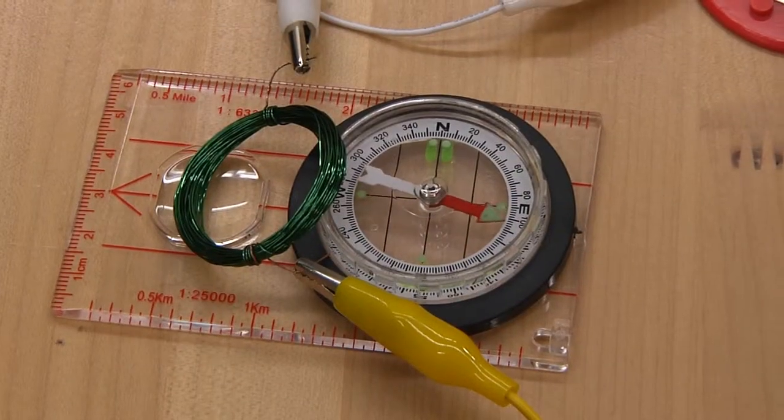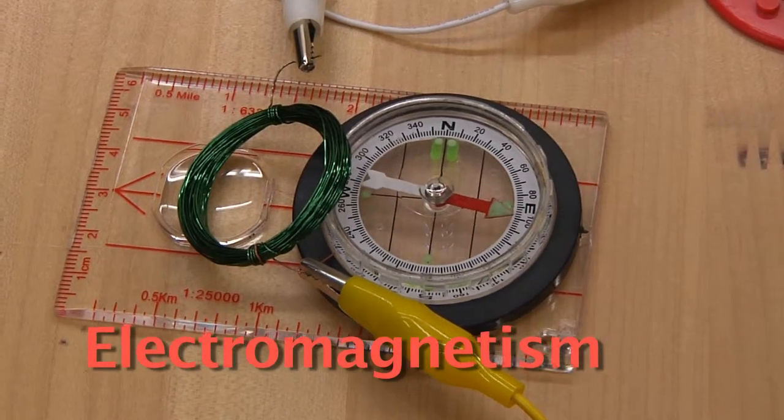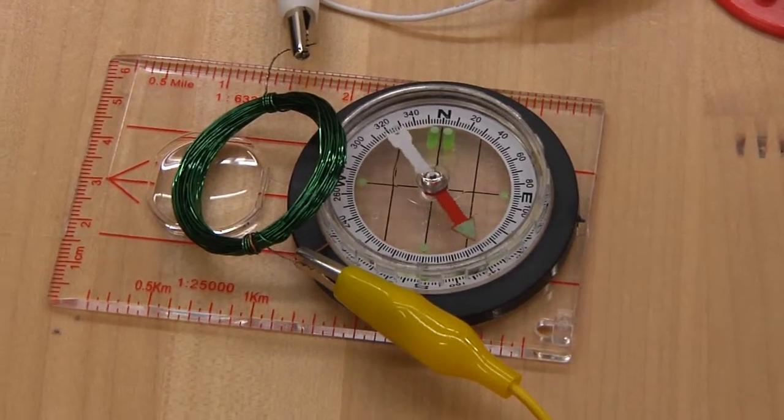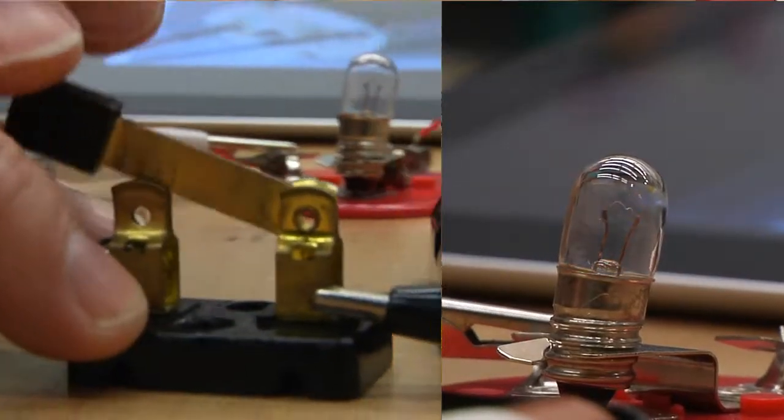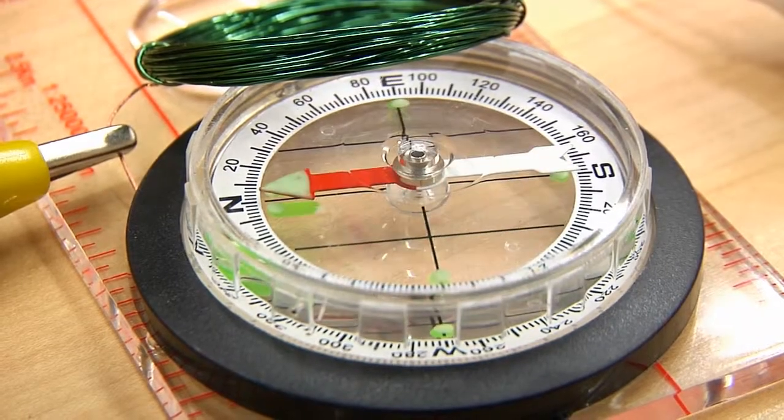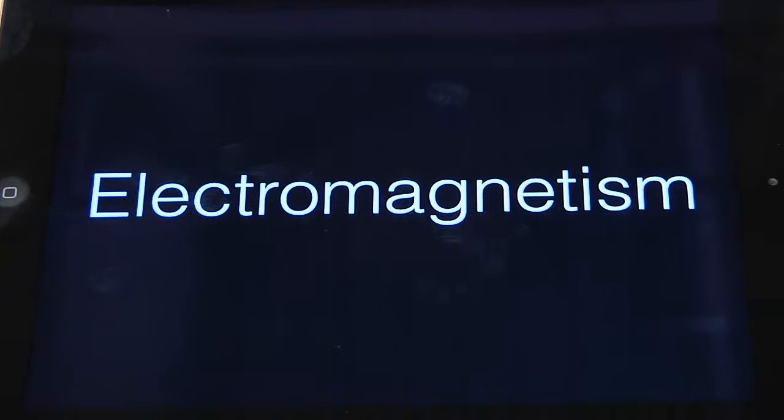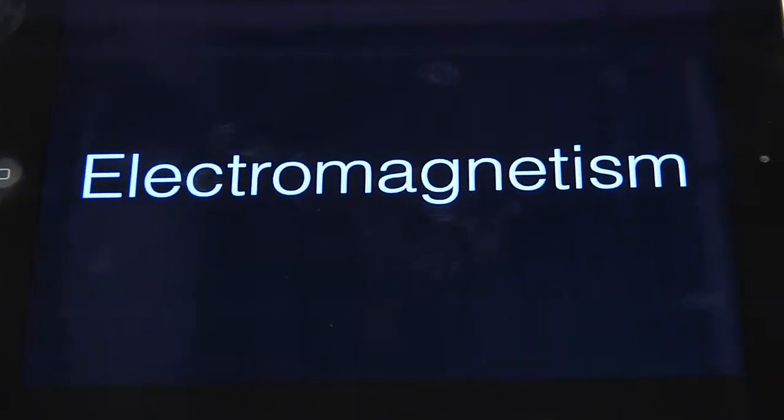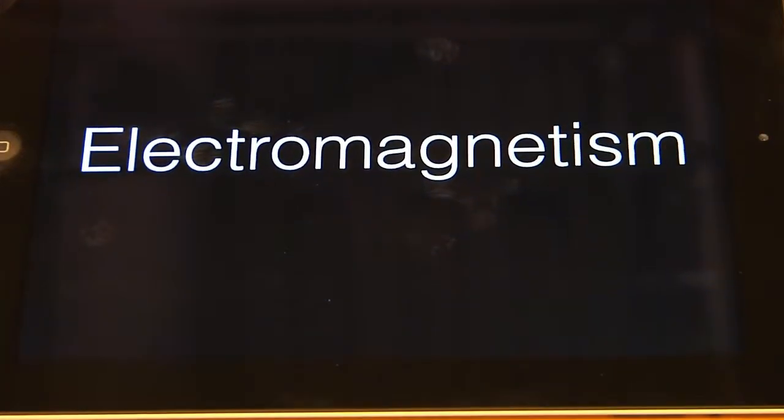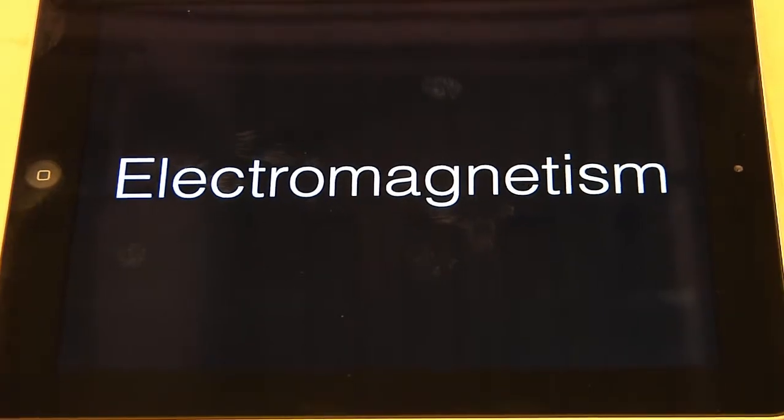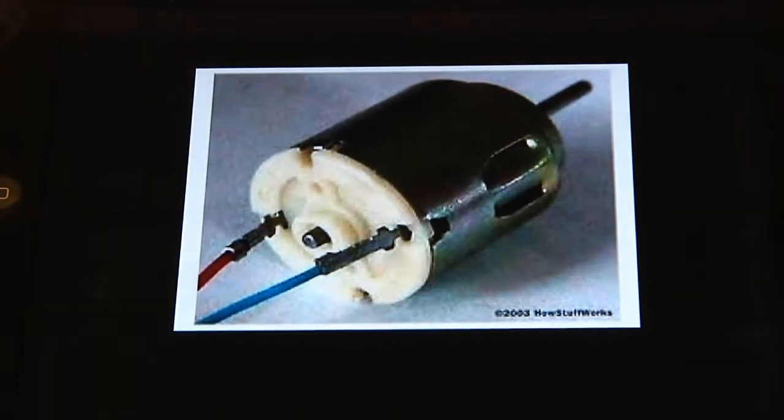That meant the electric current also generated a magnetic field. For the next 50 years, scientists continued to study this phenomenon along with others, eventually unifying the two forces into electromagnetism. The idea that electric current and magnetic fields not only affect each other, but are therefore connected. And it is electromagnetism that makes electric motors work.